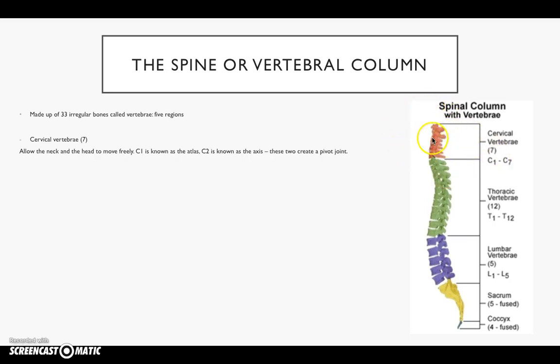Cervical spine number one, so the first vertebrae is known as the atlas, this one here. And the second one, C2, is known as the axis. The reason we need to know this is because these two bones create a joint known as a pivot joint, i.e. they let us look left and look right. Rotation.